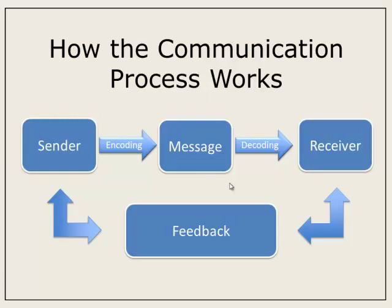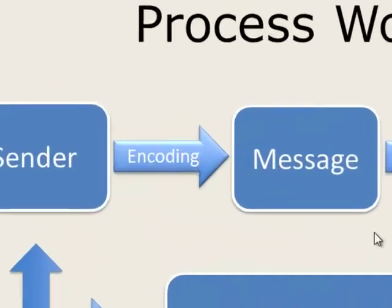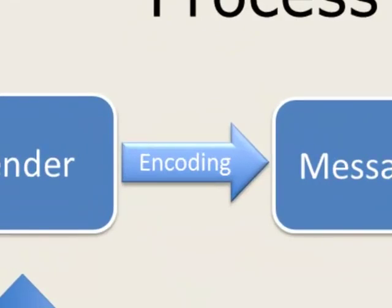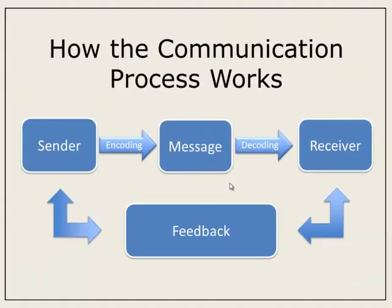The sender is in charge of what's called encoding a particular message. Encoding is not only determining what it is that you're going to say, but how it is that you're going to communicate it, including that non-verbal communication piece — things like body language and the tone of our voice, the pace of our voice, whether or not we make eye contact — all factors into how we send a particular message.